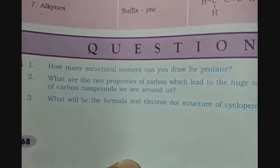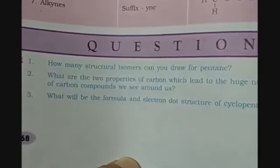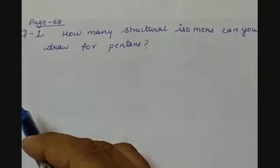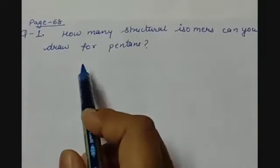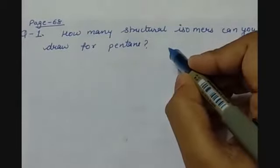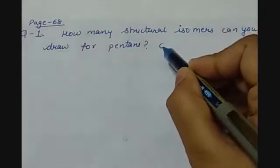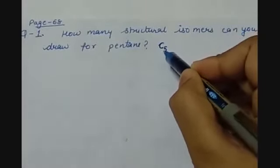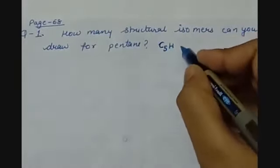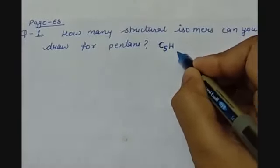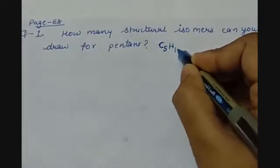Moving to page number 68, we have three questions. The first question is: how many structural isomers can you draw for pentane? The next question is: what are the two properties of carbon which lead to the huge number of carbon compounds? Pentane is a carbon chain having 5 carbon atoms with formula CnH(2n+2), so it will be C5H12.